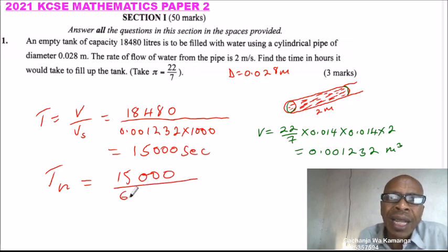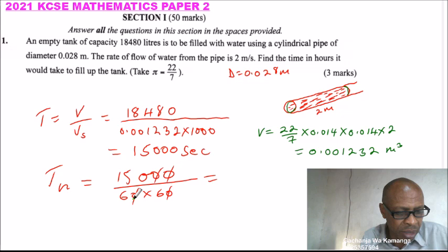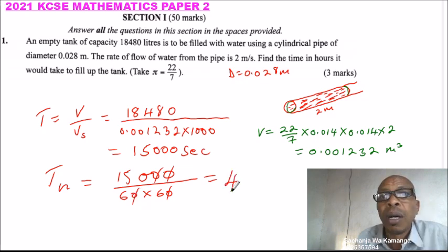One hour has 60 minutes, one minute has 60 seconds. Multiply by 60 minutes. When you divide that, you can say 150 divided by 36, and that should give you 4 and 1 over 6 hours.